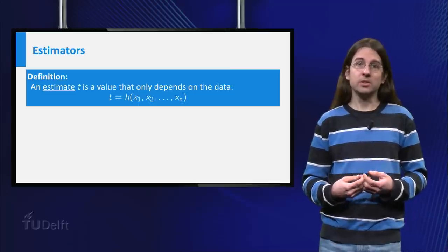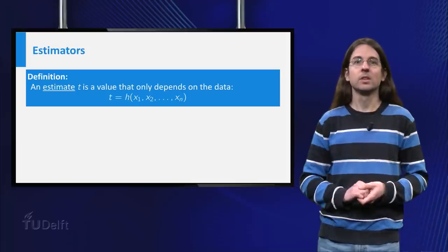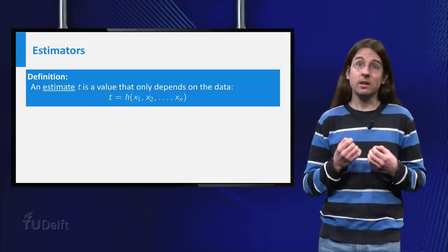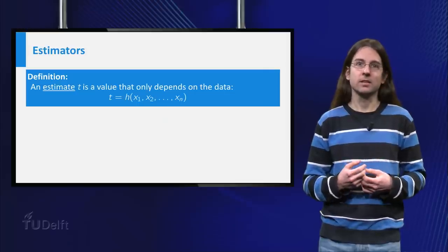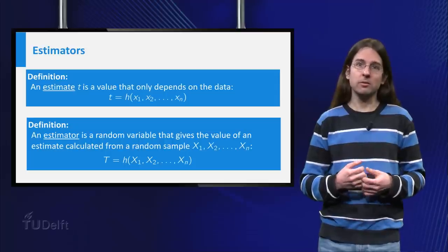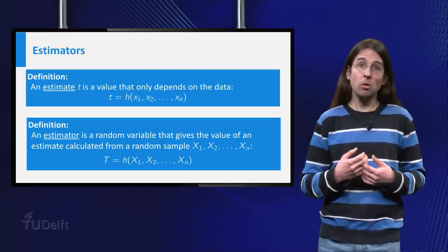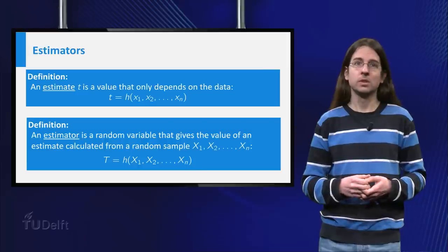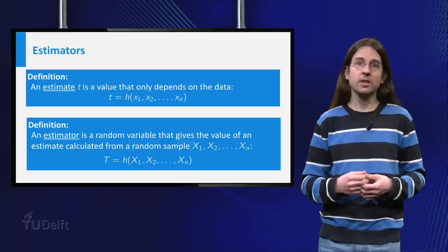If we repeat the experiments on a different day, we get different values for these xi. Thus the xi are in fact outcomes of some random variable capital Xi. As the estimate depends on the values of the little xi, this means that the value of the estimate is also a random variable. This random variable is called an estimator and written capital T.